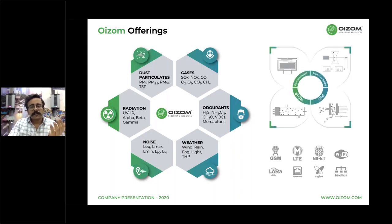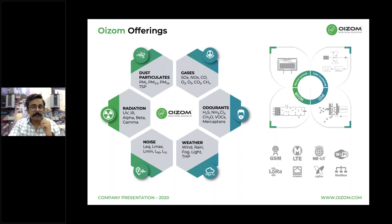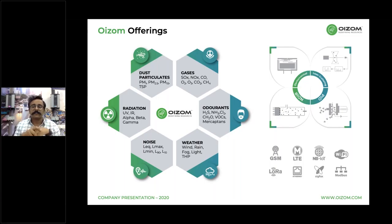Our gas sensors work on the principle of electrochemical sensing — reacting to the target gas and generating an electrical output which varies with the amount of target gas present. Some gaseous parameters work on non-dispersive infrared (NDIR) principles, where each constituent gas absorbs infrared at a particular frequency. Most odorants are measured using PID sensors, where a photo-ionization detector detects positive and negative ions. Dust particulates are measured using laser scattering. Our device is communication agnostic — supporting GSM, Ethernet, Wi-Fi, Modbus, LoRa, and NBIOT protocols.